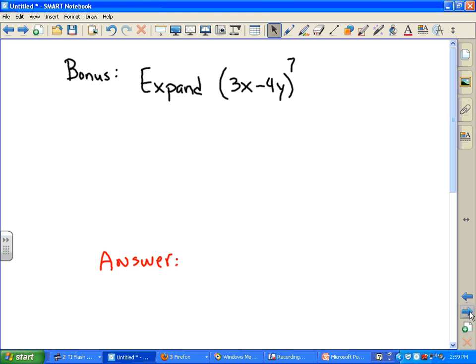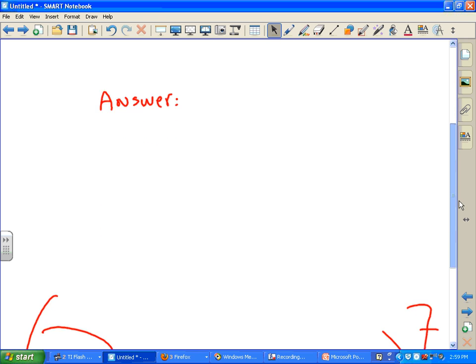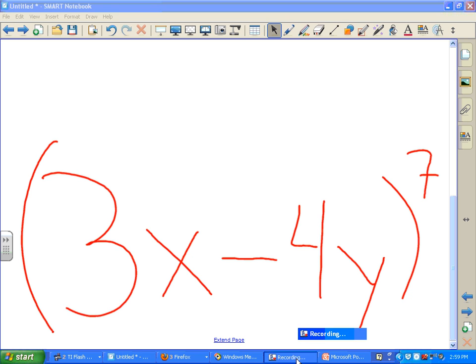It takes a while to do that, but here's one of the answers that we got from one of the students. On the back of the paper, on the back of the test, this was the answer that he wrote. He expanded, all right? The big 3x minus 4y raised to the 7th. That was the answer we got.